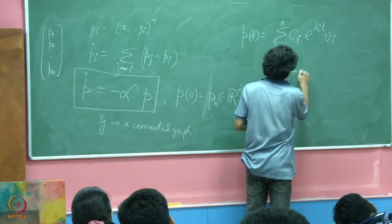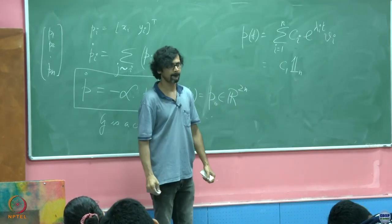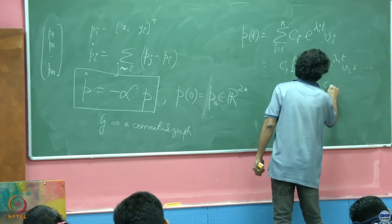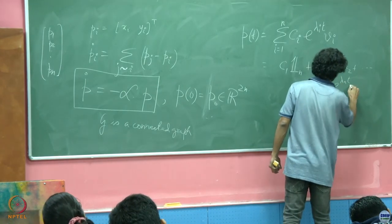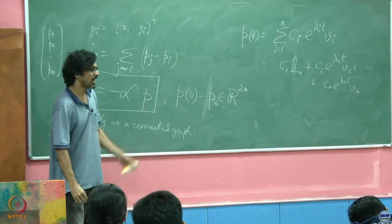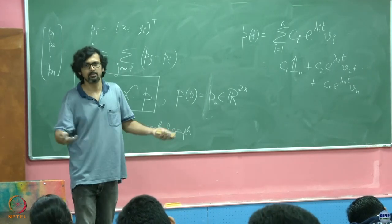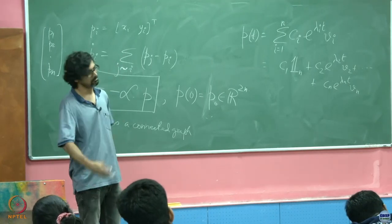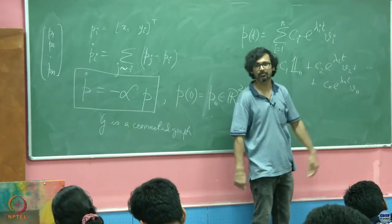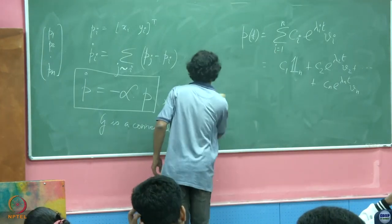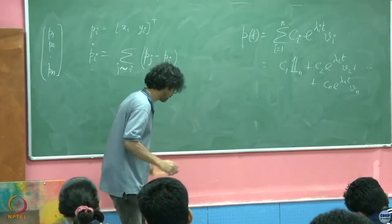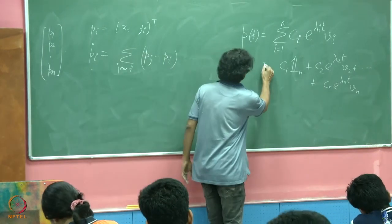So this is just the all ones vector, plus C_2 e^{lambda_2 t} V_2 plus so on till C_n e^{lambda_n t} V_n. I do not care if the lambdas are distinct or not. This matrix L is always going to be diagonalizable. If it is diagonalizable, then there is going to be no terms such as T or T squared appearing here because the Jordan form is just the diagonal form. We will see that in some greater detail also.